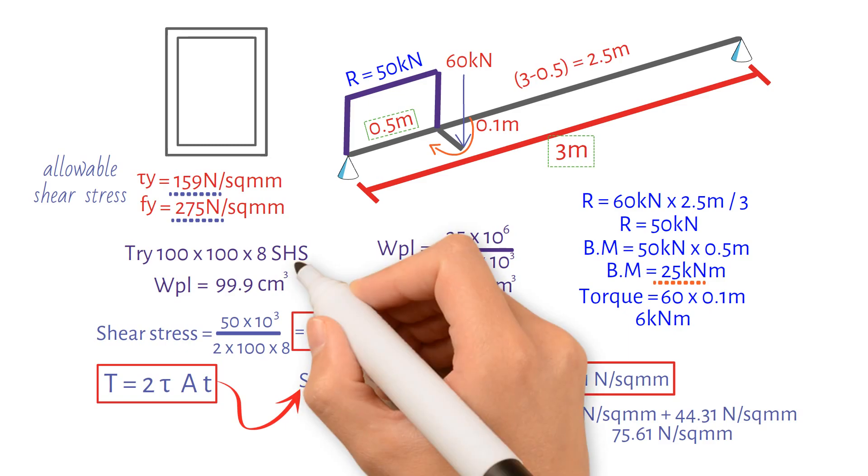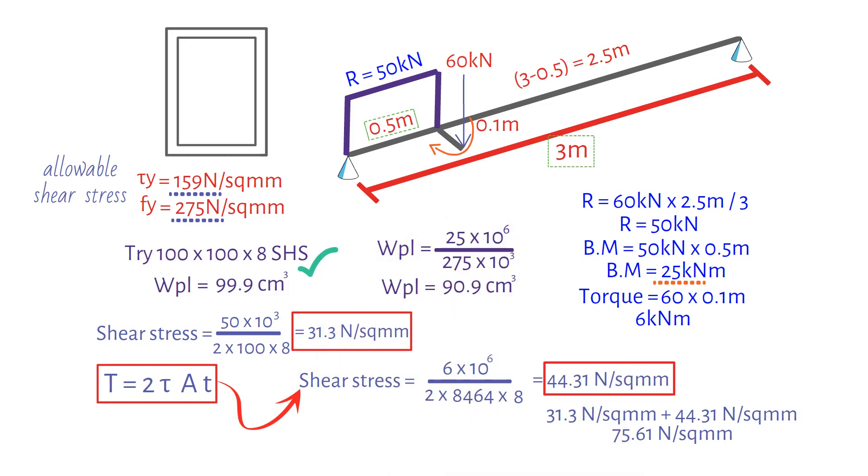Therefore, the optimal choice is to use a 100 by 100 by 8 square hollow section. Thanks for watching.